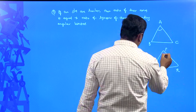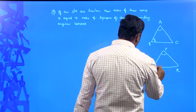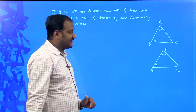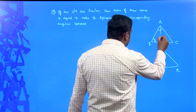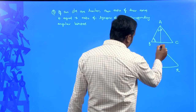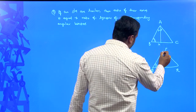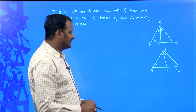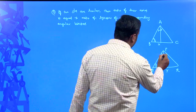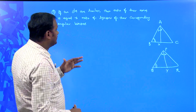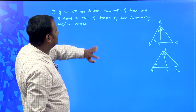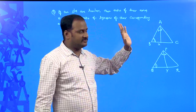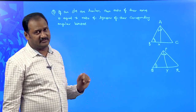Two triangles are similar means angle A is equal to angle P, angle B is equal to angle Q, and angle C is equal to angle R. We also need angular bisectors. Let AX be the angular bisector of angle BAC, and PY be the angular bisector of angle QPR, each dividing the vertical angle into two equal parts. We need to prove that area of triangle ABC by area of triangle PQR equals AX squared by PY squared.